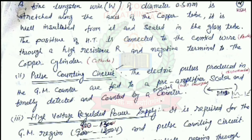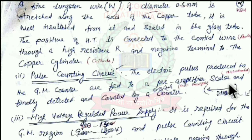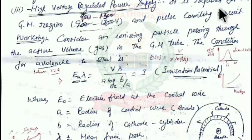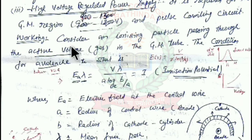The pulse counting circuit receives the electric pulses produced in the GM tube, which are fed to a pre-amplifier, then to a scaler, and finally detected and counted by the counter. The regulated high-voltage power supply is required for maintaining the GM operating region and powering the pulse counting circuit.